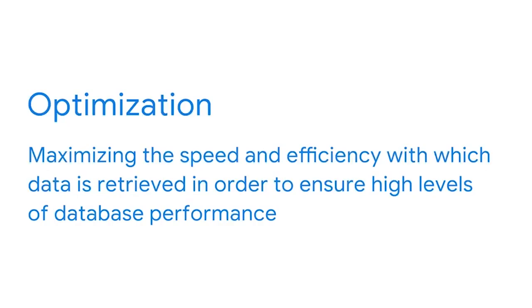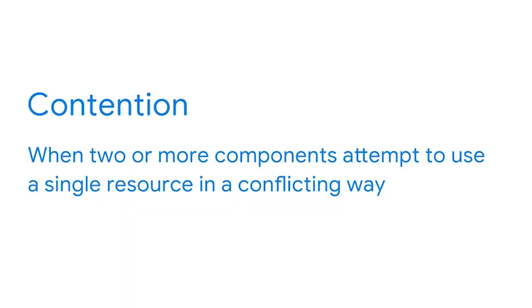Now we come to optimization. Optimization involves maximizing the speed and efficiency with which data is retrieved in order to ensure high levels of database performance. This is one of the most important factors that BI professionals return to again and again. Finally, the last factor of database performance is contention. Contention occurs when two or more components attempt to use a single resource in a conflicting way — for instance, if there are multiple processes trying to update the same piece of data, those processes are in contention. As contention increases, the throughput of the database decreases, so limiting contention as much as possible will help ensure the database is performing at its best.